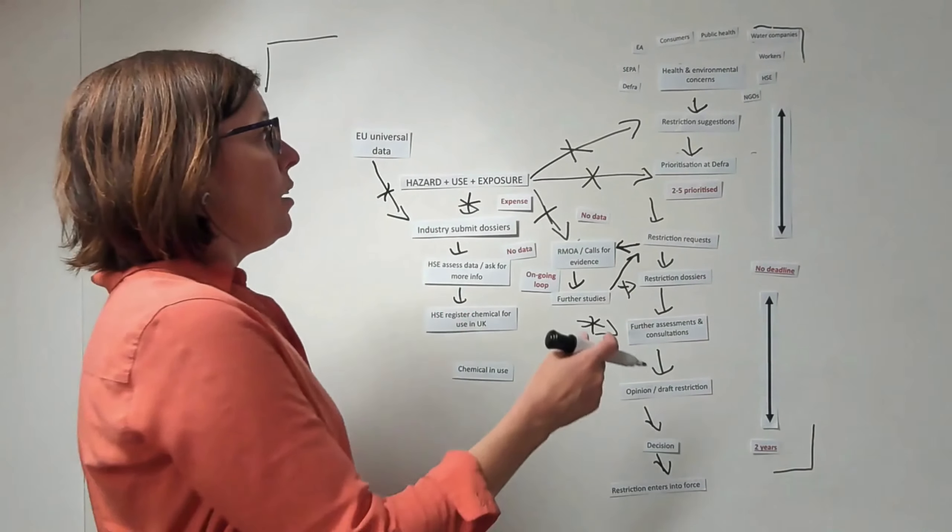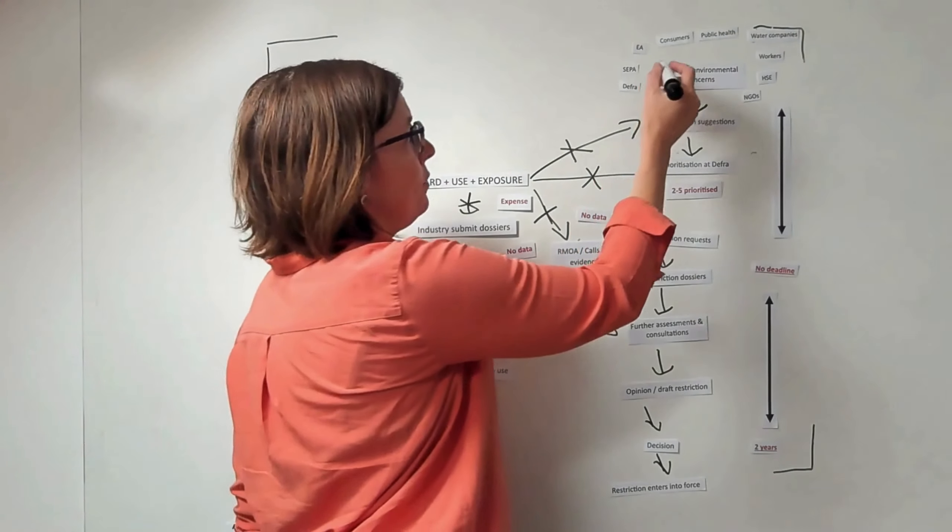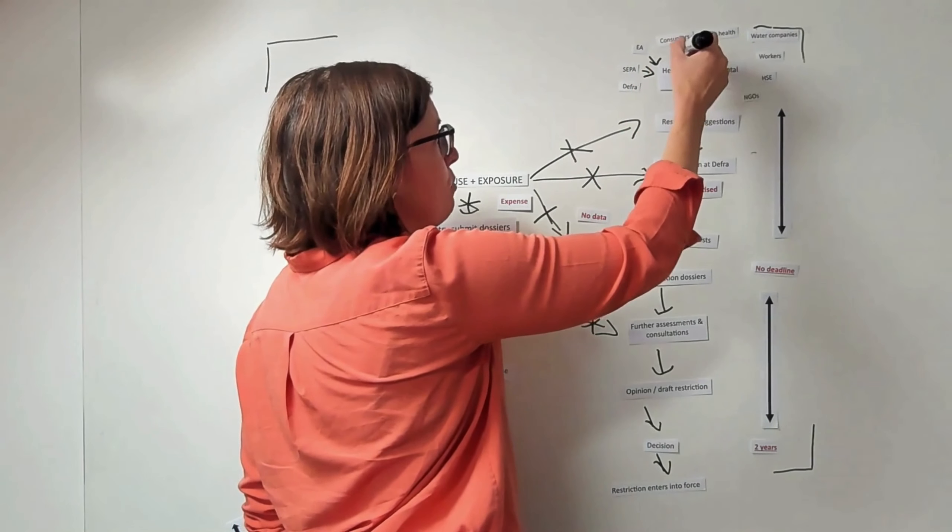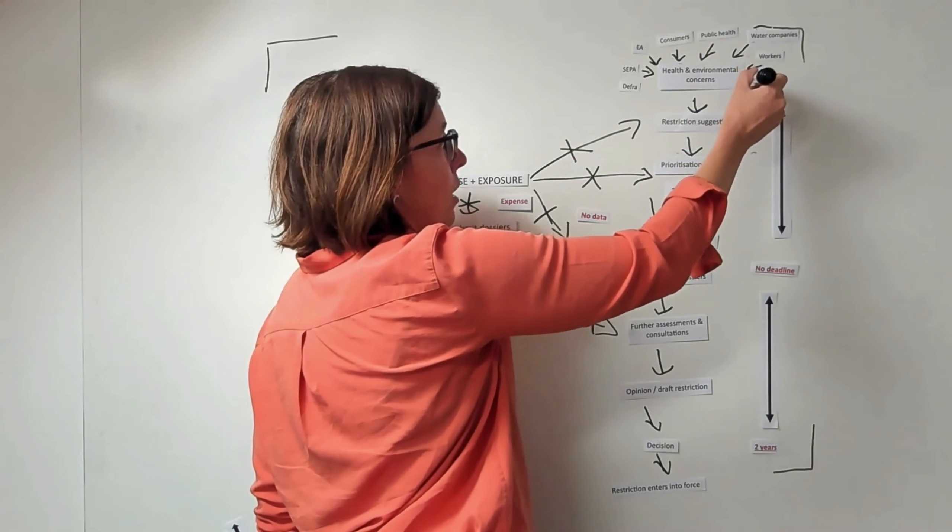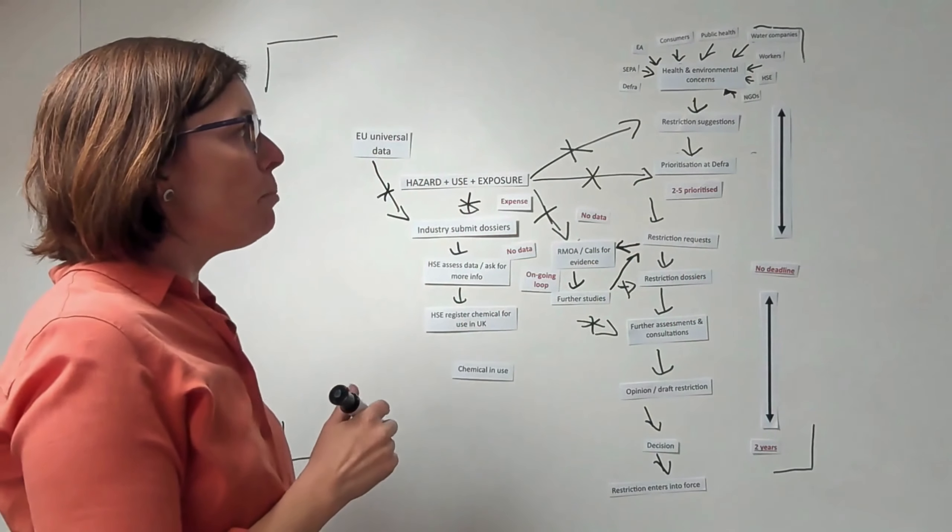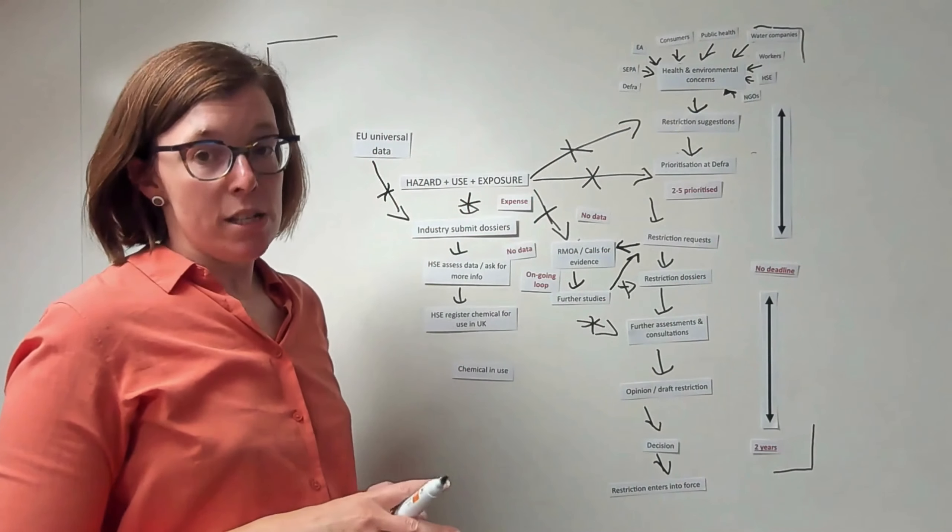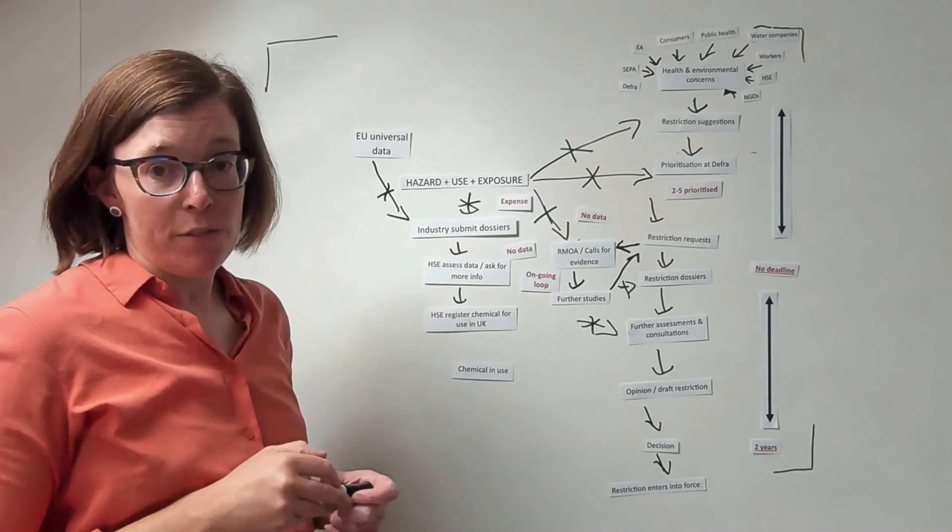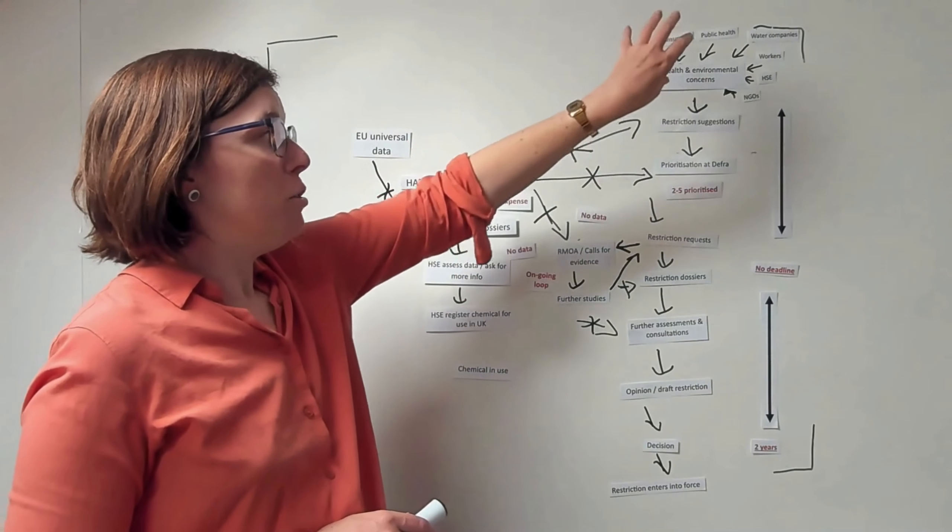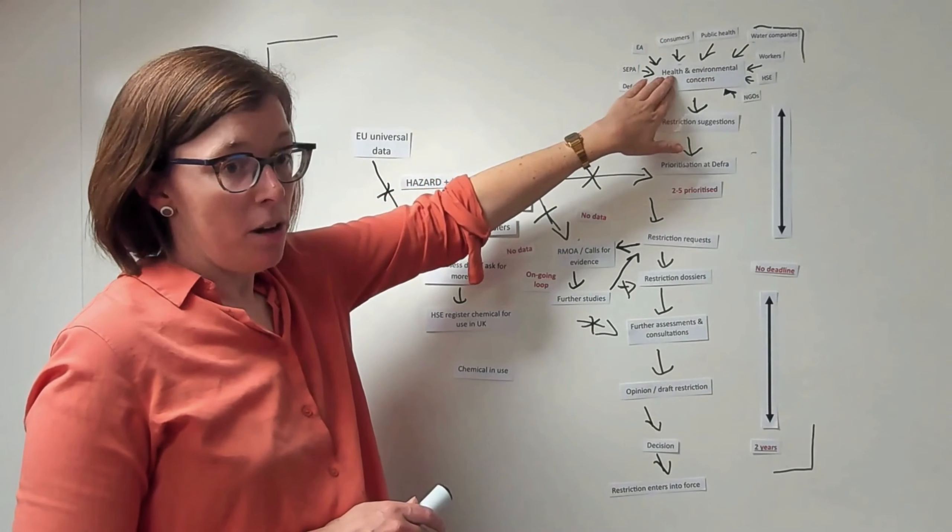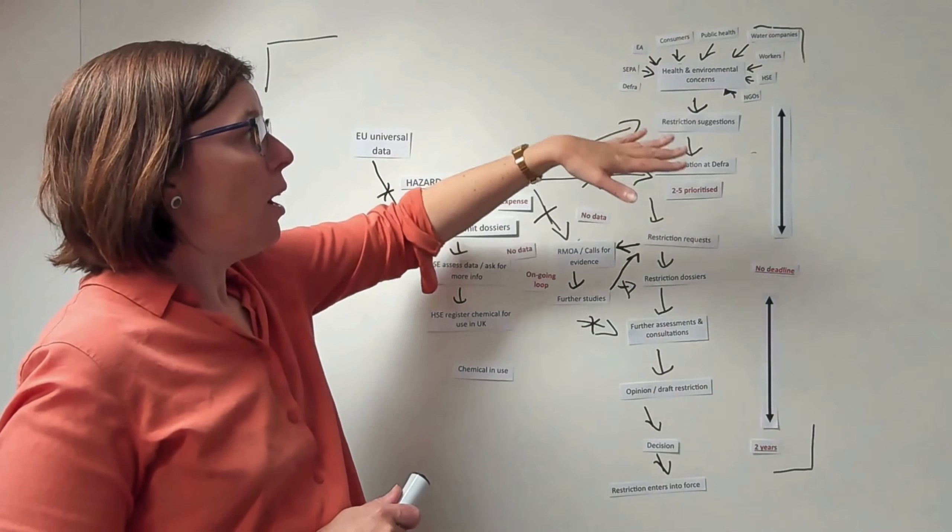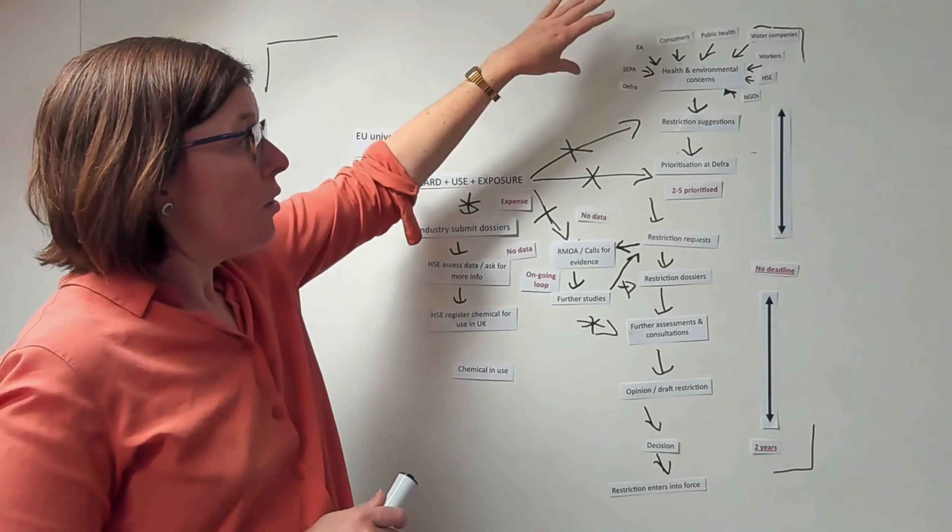We do have a lot of these groups in the UK. We've got SEPA here in Scotland, we've got the Environment Agency, we do have public health bodies, and so there are a number of different organizations that could help monitor. We could have universities that might be aware of health and environmental concerns. But these groups haven't been given extra resource and extra responsibilities to identify those health and environmental concerns. So really at the very start of the process, we haven't set ourselves up to be able to identify enough health and environmental concerns to replicate what we were doing or to keep up with the number of chemicals on the market.